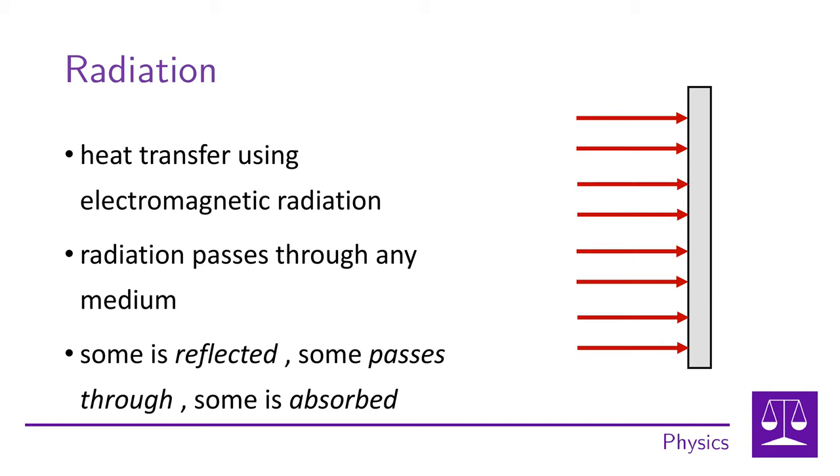The amount of energy that a substance absorbs by radiation depends on the color of the fabric. When the radiation hits the object, some of the radiation is reflected, some of it passes through the object, and some of it is absorbed. The energy that heats the object is only the energy that will be absorbed.